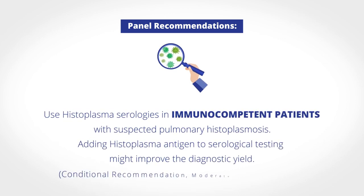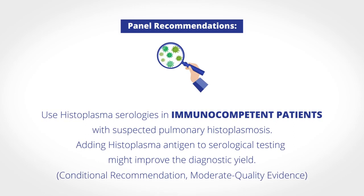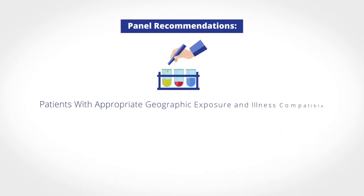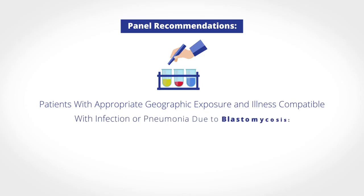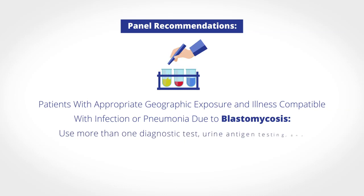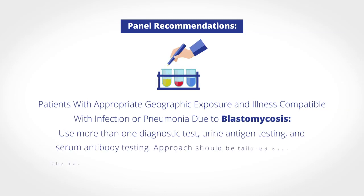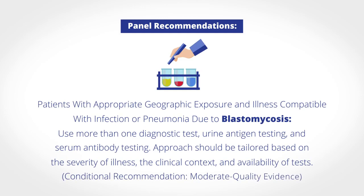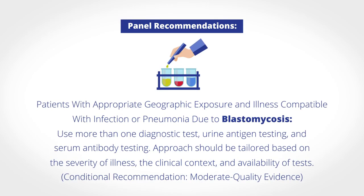The panel suggests the use of histoplasma serologies in immunocompetent patients with suspected pulmonary histoplasmosis, and adding histoplasma antigen to serological testing might improve the diagnostic yield. In patients with appropriate geographic exposure and illness compatible with infection or pneumonia due to blastomycosis, the panel suggests using more than one diagnostic test, including direct visualization and culture of sputum, bronchoalveolar lavage, or other biopsy material, urine antigen testing, and serum antibody testing. The current evidence cannot support a single best test as being sensitive enough to be ordered in isolation.